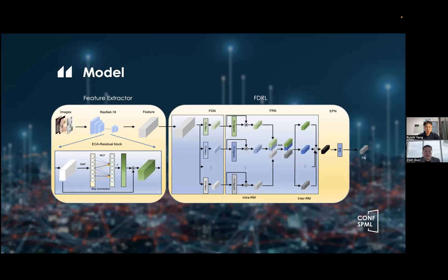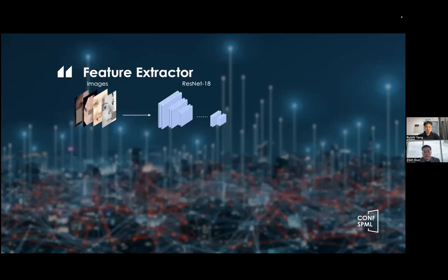So the main idea of the proposed model is just a combination of Feature Extractor and our baseline model, FDRL. So in this section, we'll elaborate on the details of the model. For the first part, Feature Extractor, the pre-processed images will be used as the input, and then it will be fed into the classic CNN ResNet-18.